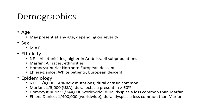Epidemiology: Noonan syndrome — 1 in 4,000, with 50% of new patients having Dural Ectasia, making it common. Marfan syndrome — 1 in 5,000 in the USA, with Dural Ectasia present in more than 60% of cases.